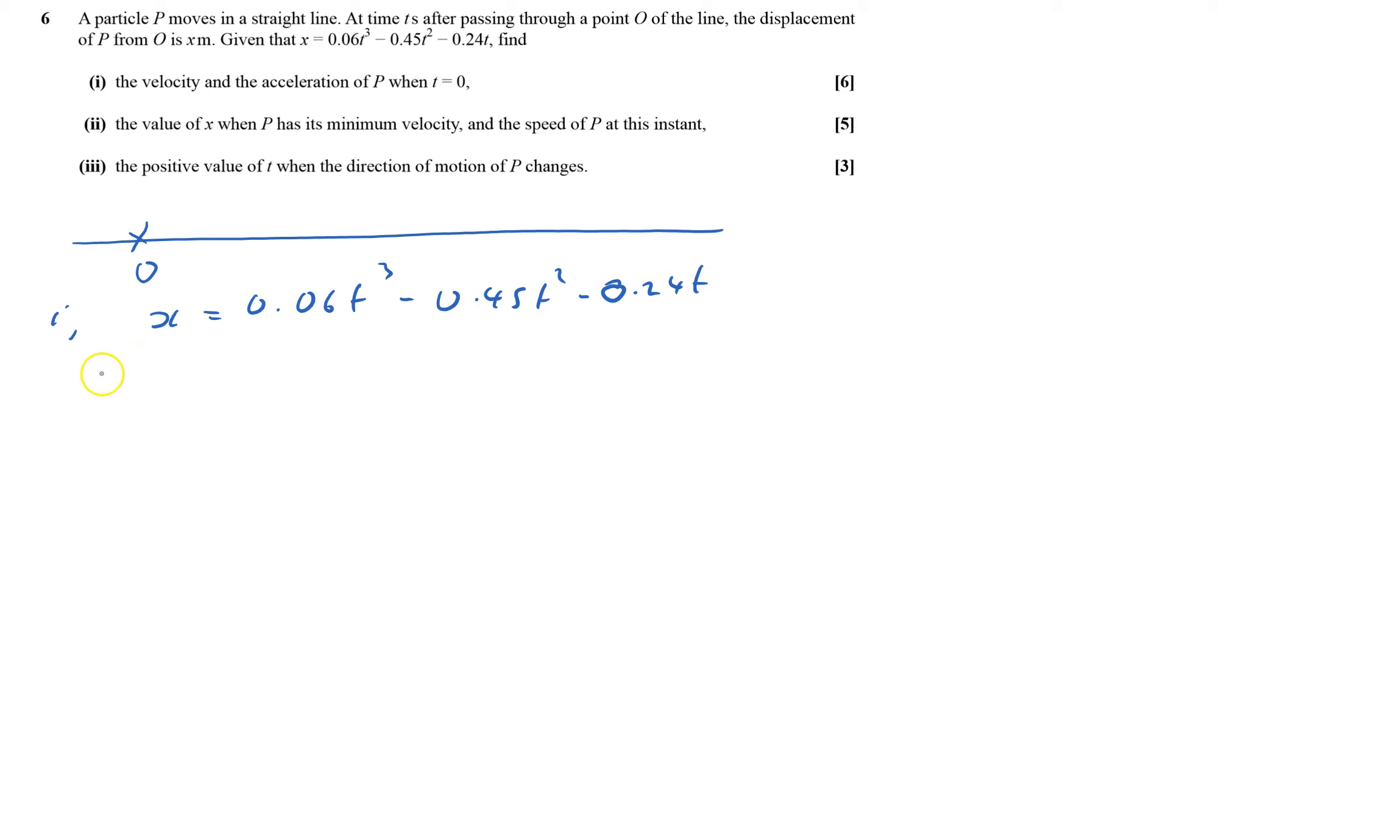So velocity equals dx by dt, which equals three times that, will be 0.18t squared minus 0.9t minus 0.24.